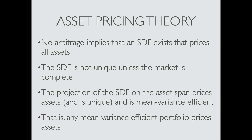Interestingly, Ross's name never even came up — if we're going to talk about factor models, you'd think Ross would be one of the citations. So let's go through some of the results that Ross and others derived. No arbitrage implies that an SDF exists. That SDF is not unique — it's only unique if the market is complete. But the projection of that SDF on the asset span is unique, and it's the mean-variance efficient portfolio.